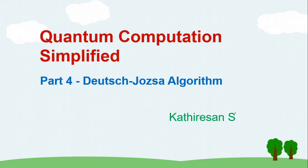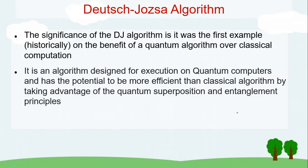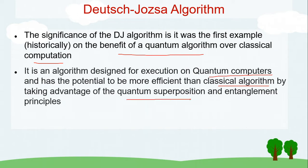Welcome back to Quantum Computation Simplified, part 4. In this video we'll be seeing an interesting algorithm with whatever we have learned, and this proves that quantum computation is superior to classical computation. This algorithm was the first example of the benefit of a quantum algorithm over classical computation — it's designed for quantum computers and has the potential to be more efficient by taking advantage of superposition and entanglement.